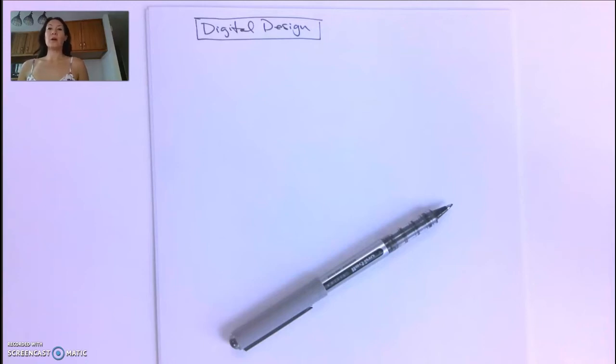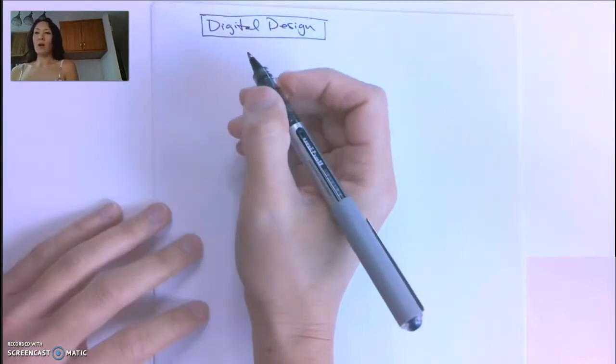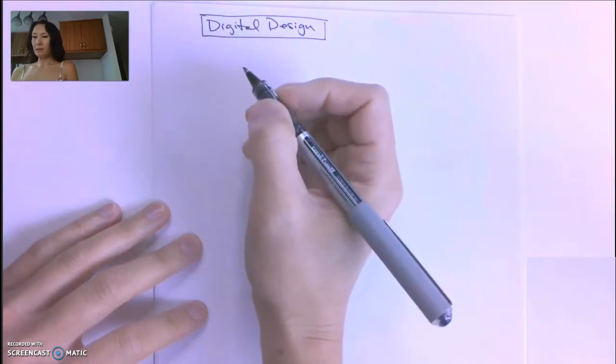After watching the video on the iterative division algorithm, we're going to see how you can use this method to convert from decimal to any number base. So to start, let's convert decimal 93 to octal, which is base 8.